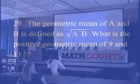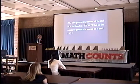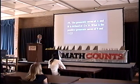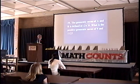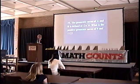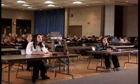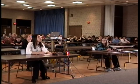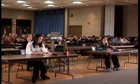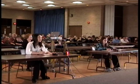The geometric mean of a and b is defined as the square root of a times b. What is the positive geometric mean of 9 and 1 and 1/9? Ingrid? 10. 10 is correct.